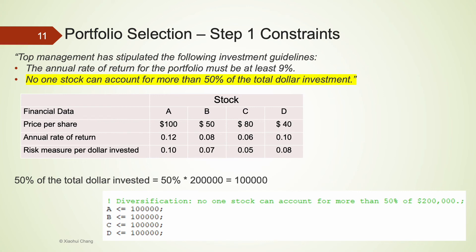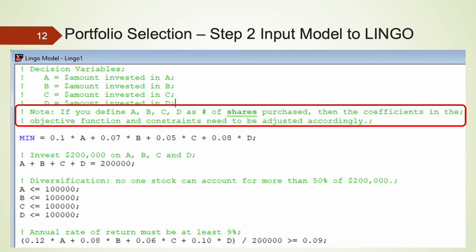We have successfully completed step 1. Now in step 2, let's input all the code in LINGO. Note that there is usually more than one way of defining the decision variables. In this example, I used A, B, C, D to represent the dollar amount invested in each stock respectively. If you define your decision variables as number of shares purchased, then the coefficients in the objective function and constraints need to be adjusted accordingly. This is my definition for the decision variables, the objective function, and the three sets of constraints.